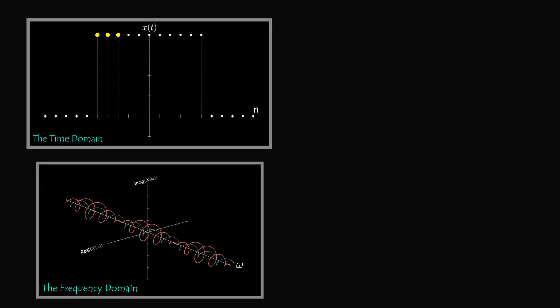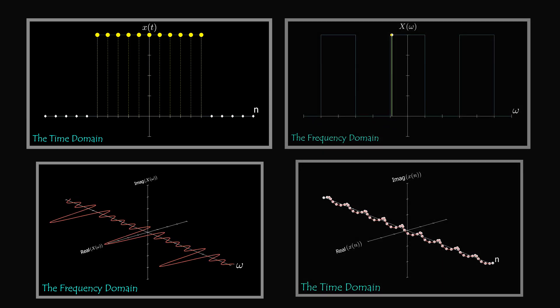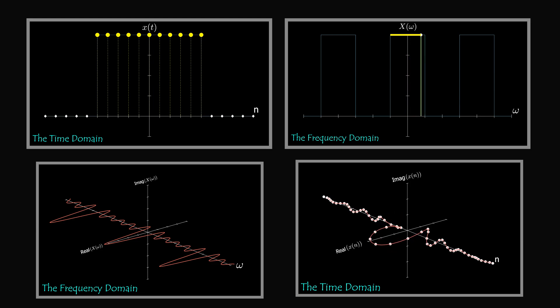The discrete time Fourier transform takes a discrete time domain signal and gives the periodic frequency domain. The inverse discrete time Fourier transform takes the periodic frequency domain signal and gives the associated discrete time signal. The inverse DTFT tells us that any discrete time signal is a linear combination of discrete time complex exponentials, whose frequencies and magnitudes are determined by the frequency domain of the signal.